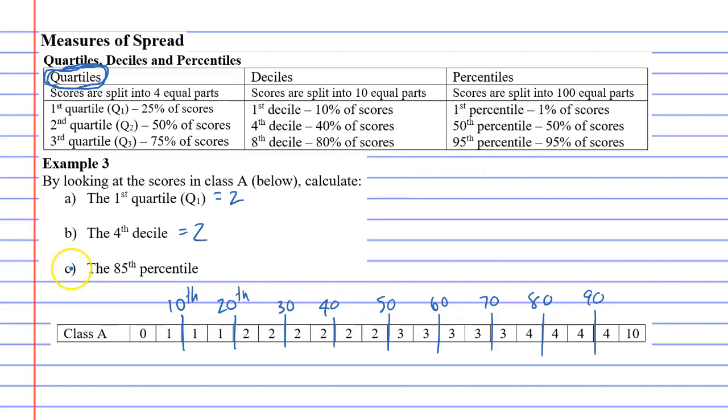So in question C, they want you to find the eighty-fifth percentile, which would actually go right here. Because this is where your eighty-five percent of the data comes to. So the eighty-fifth percentile would be four. Now it would be a lot harder if they asked for the eighty-sixth percentile or the eighty-seventh, but they're quite unlikely to ask you questions like that.